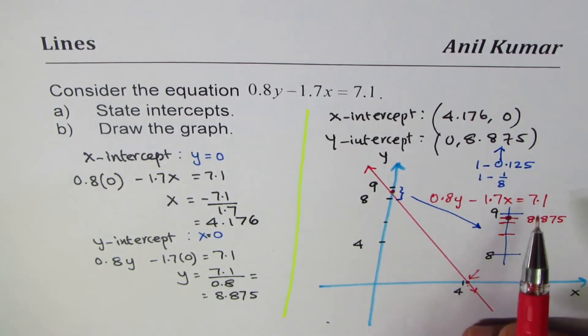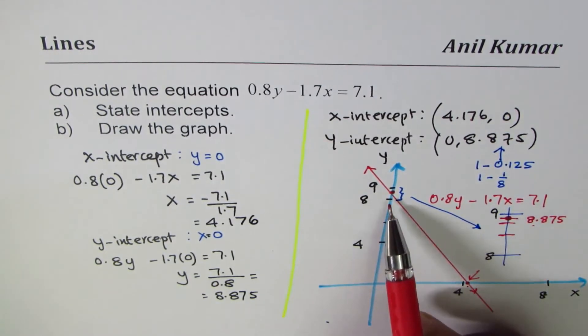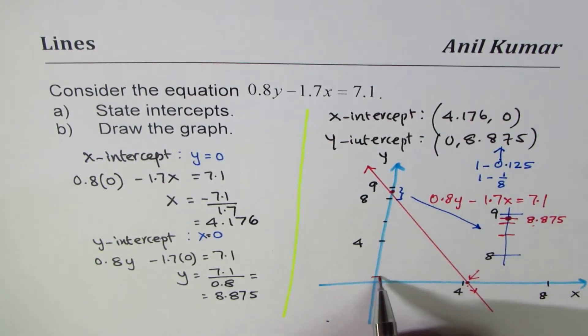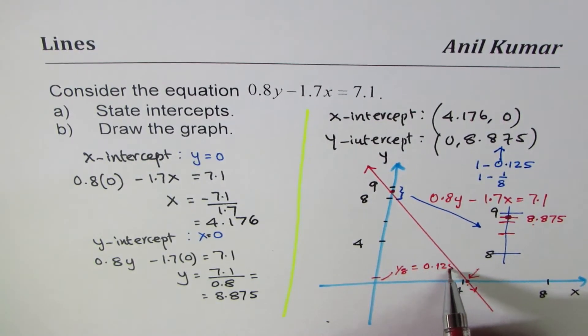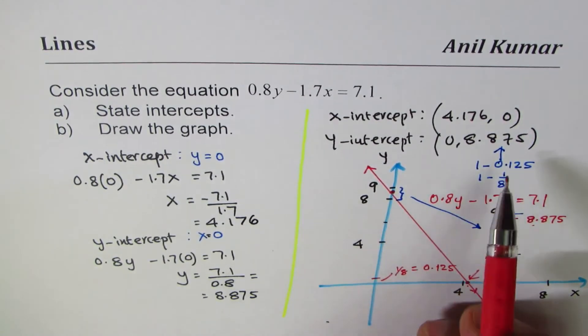I hope you understand this strategy. On a graph paper, take a scale where the minimum is one-eighth. Do you understand? Which is the same as 0.125, and that will help you to sketch this value on your graph paper for the y-intercept.